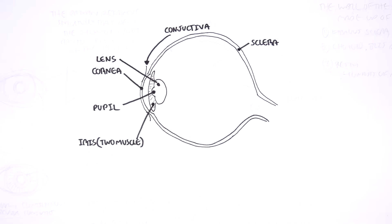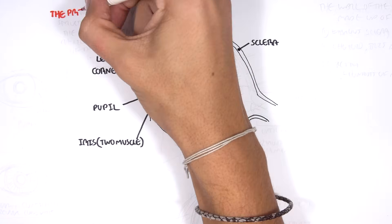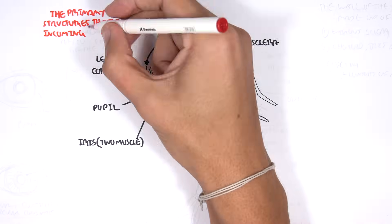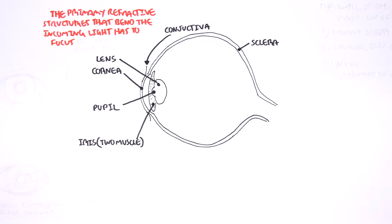Behind the pupil are the lens, which can change shape. The primary refractive structures that bend the incoming light to focus the image on the retina are the lens and cornea.